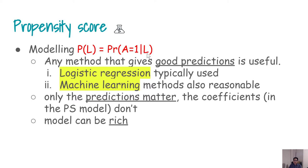We do not really care about the coefficients associated with various variables within L. The model can be rich — you can include interaction terms, polynomial terms — but not to the extent that it becomes highly collinear to where predictions are not good enough. Even when using a machine learning or logistic regression method, we have to keep focus on the real goal, which is obtaining balance. We talked about balance in a previous video and will return to it.